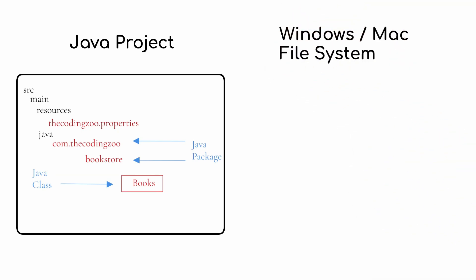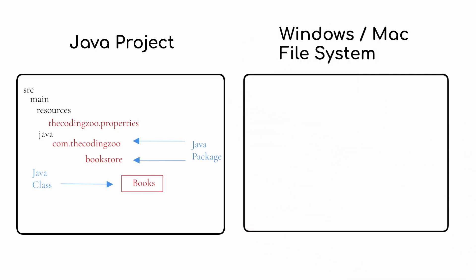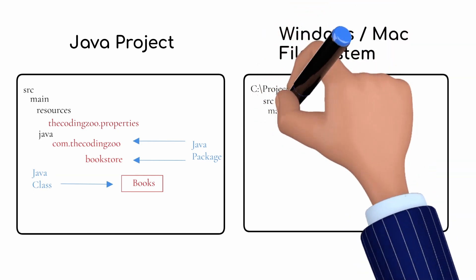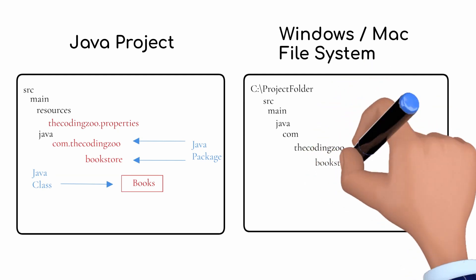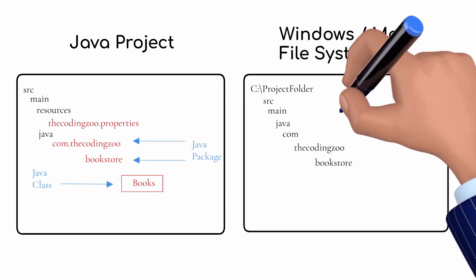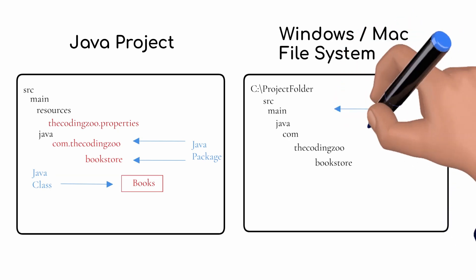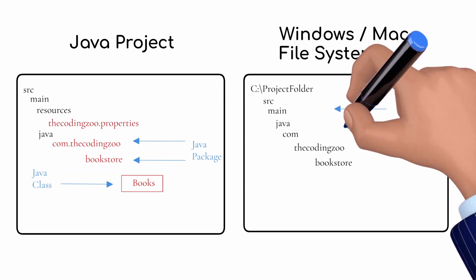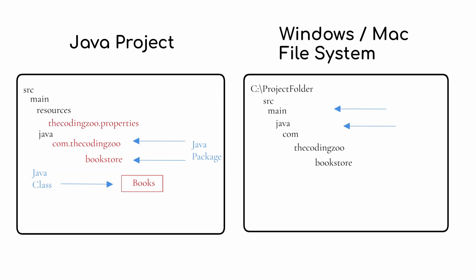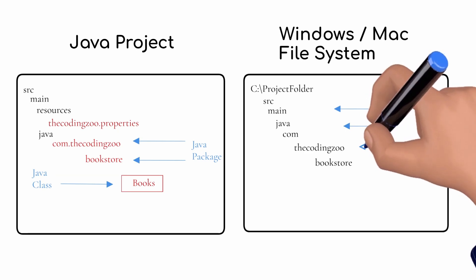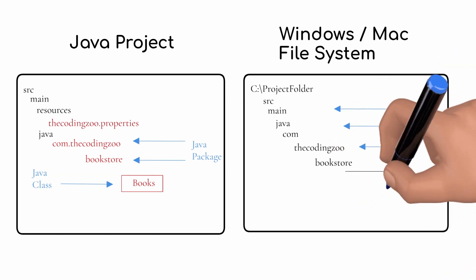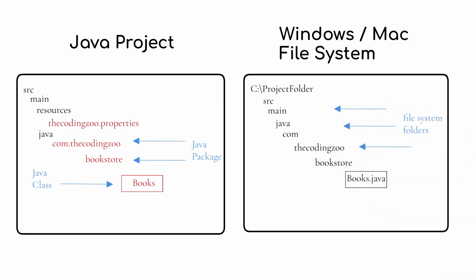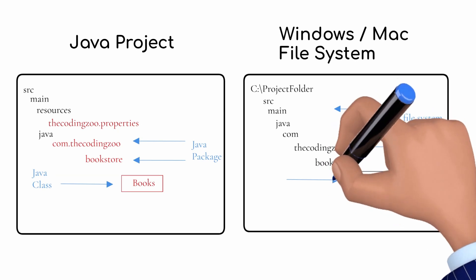These structures can also be identified outside of your project in the Windows or Mac file system. If you're on a Windows system, you would have a folder containing your project. Inside that folder you would see a folder called SRC or source, followed by the subfolder main. Inside the Java folder, a folder called com. The packages in your project are also represented by folders in your file system — com.theCodingZoo is represented as a subfolder called com under Java, and another subfolder called theCodingZoo under com. Within theCodingZoo, there would be a bookstore folder representing the bookstore package, and a books.java file representing your Java class called books.